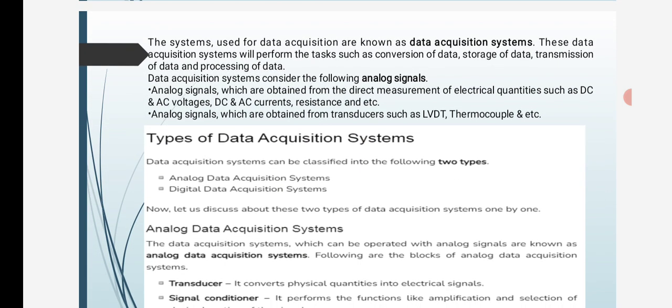The systems used for data acquisition are known as data acquisition systems. These data acquisition systems perform tasks such as conversion of data, storage of data, transmission of data, and processing of data.